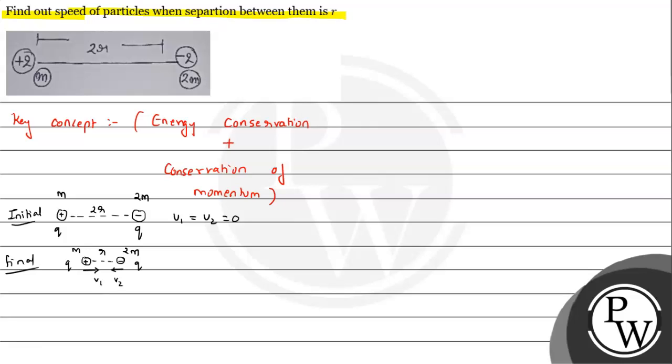By energy conservation we can write: initial kinetic energy plus initial potential energy will be equal to final kinetic energy plus final potential energy. Initially kinetic energy is equal to zero because both are starting from rest.